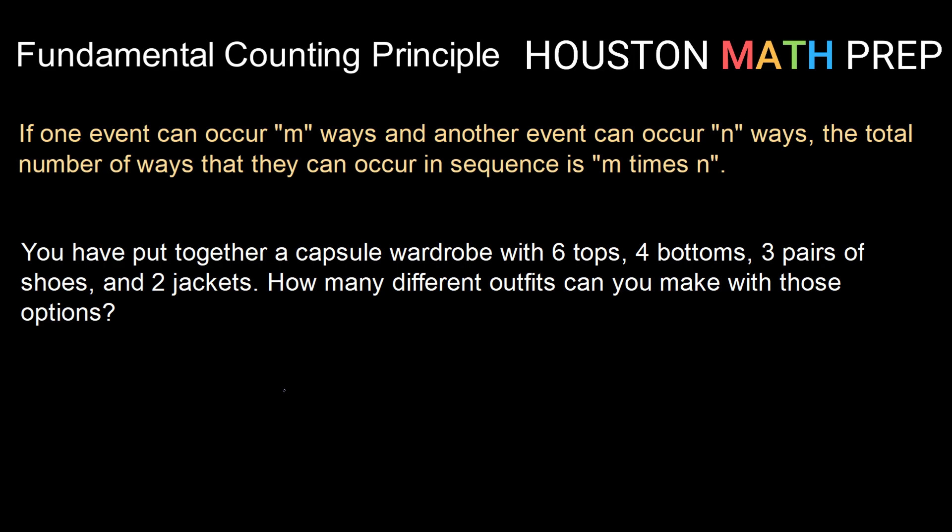This is a rule in math that allows us to count up the number of ways certain events can happen. The rule says if one event can occur m ways and another event can occur n ways, then the total number of ways that they can occur in sequence is m times n.